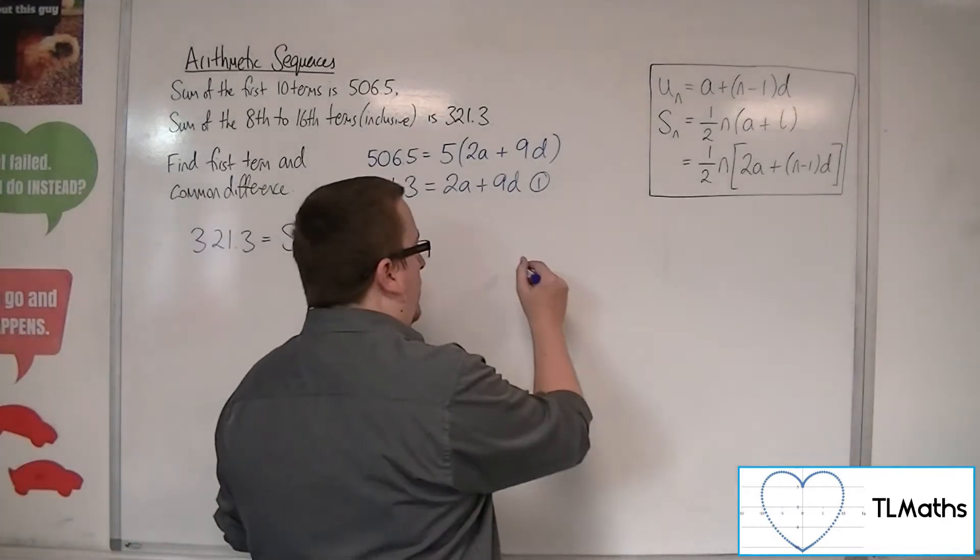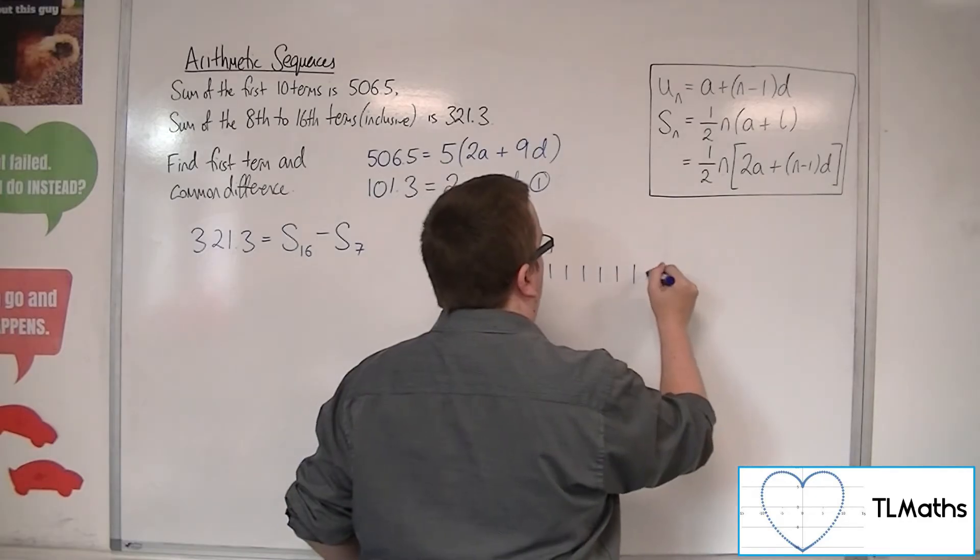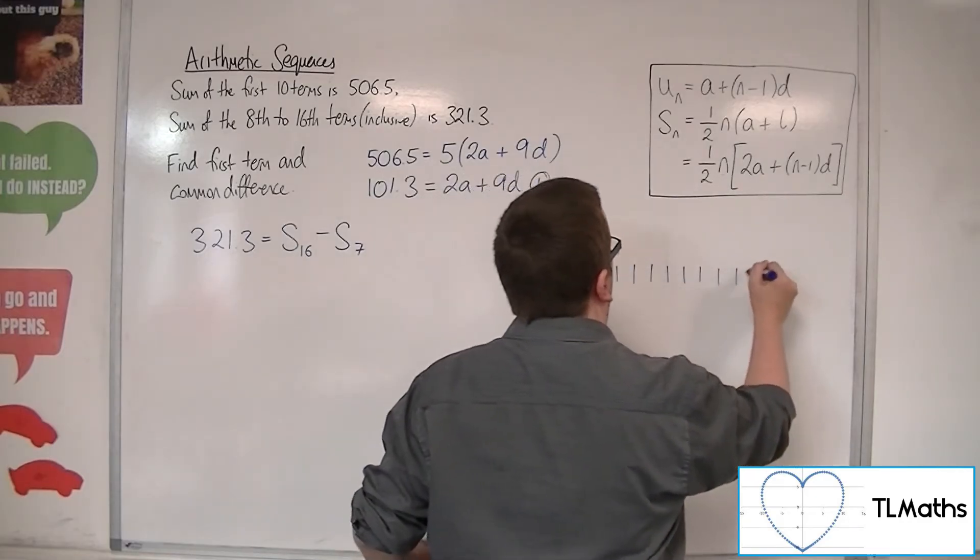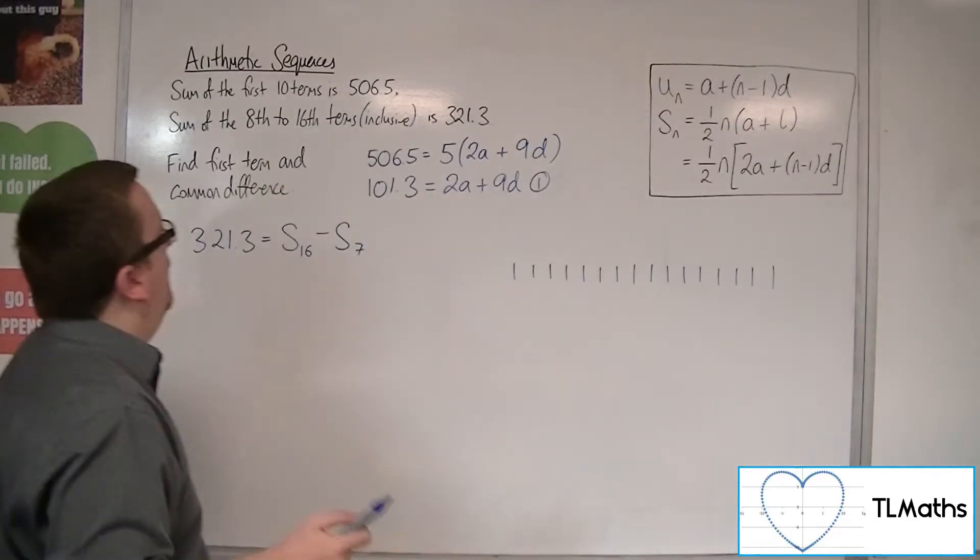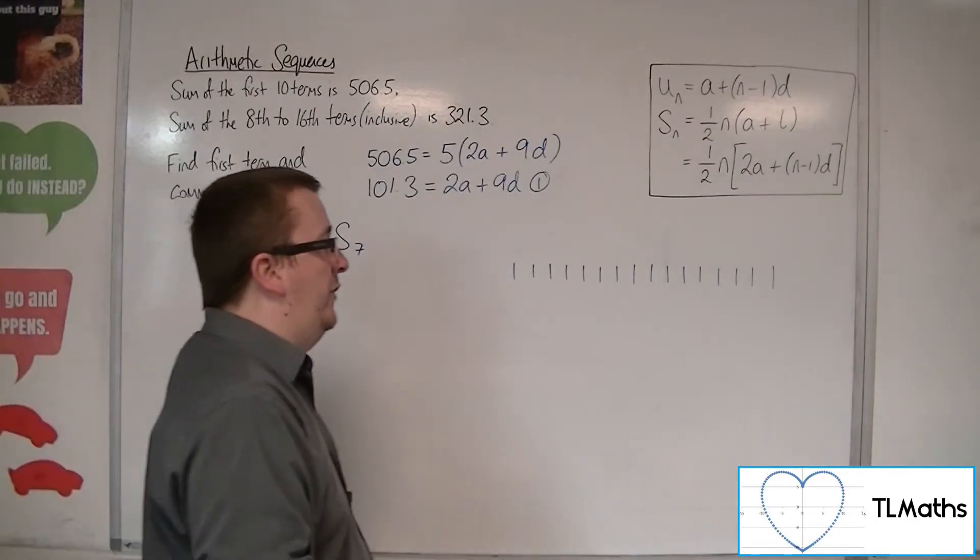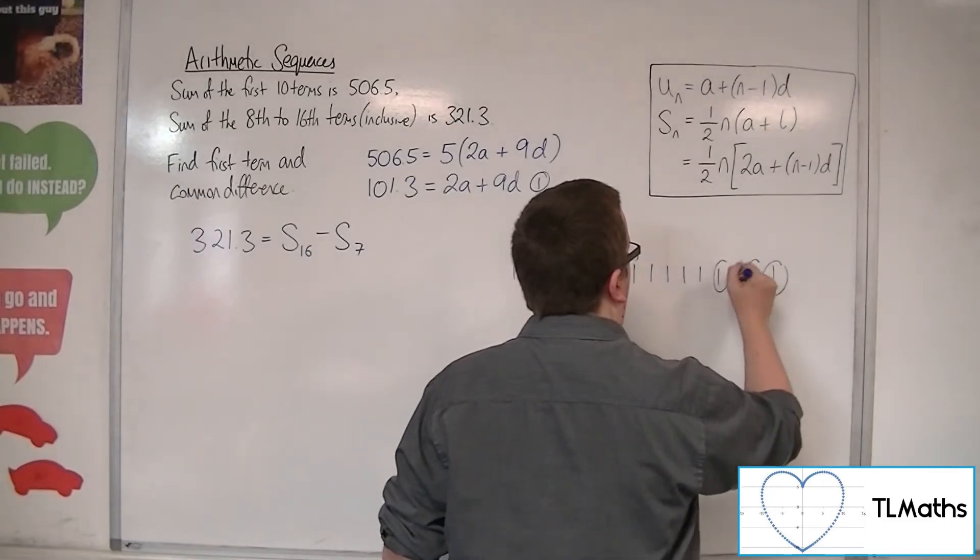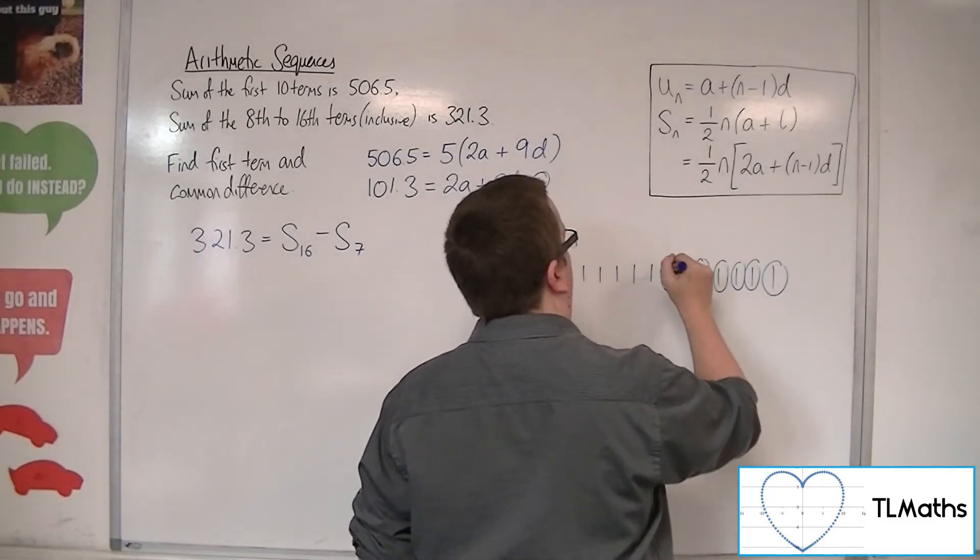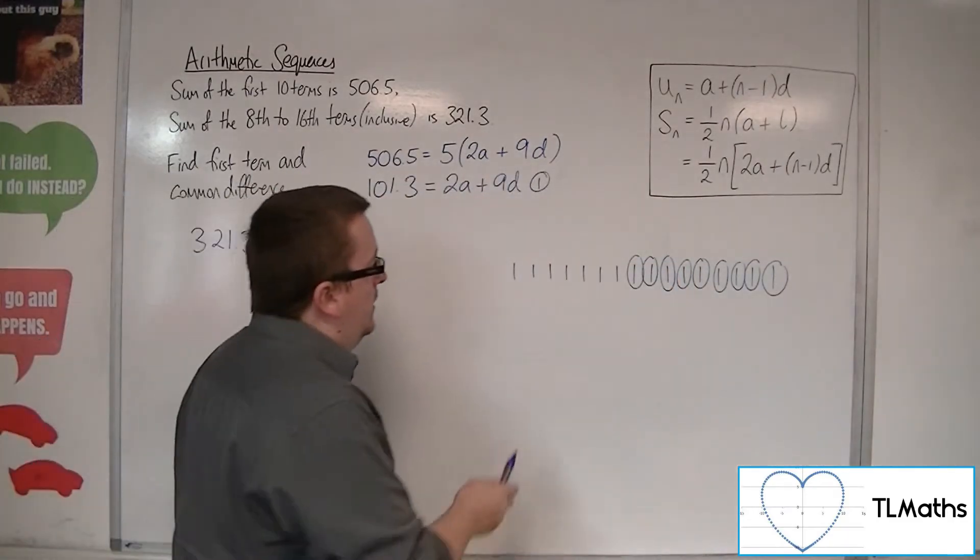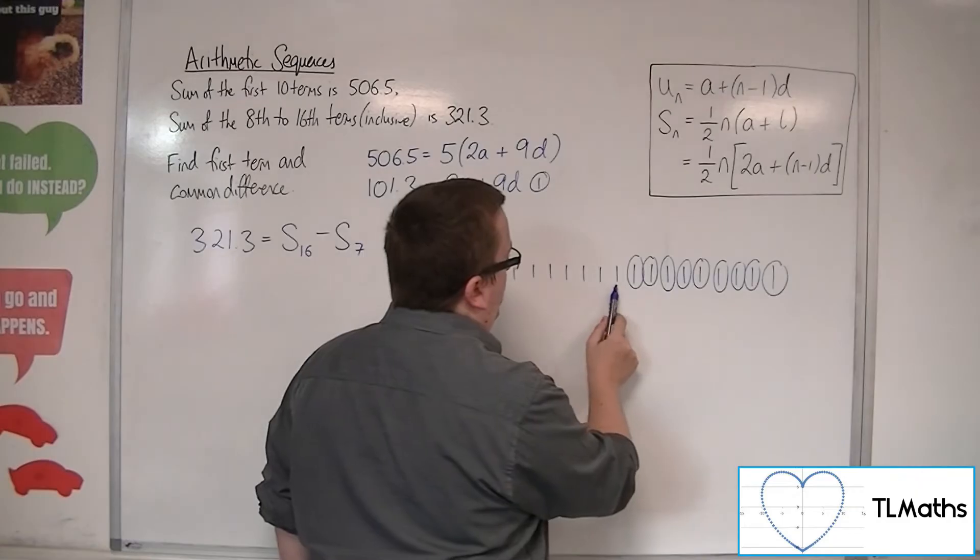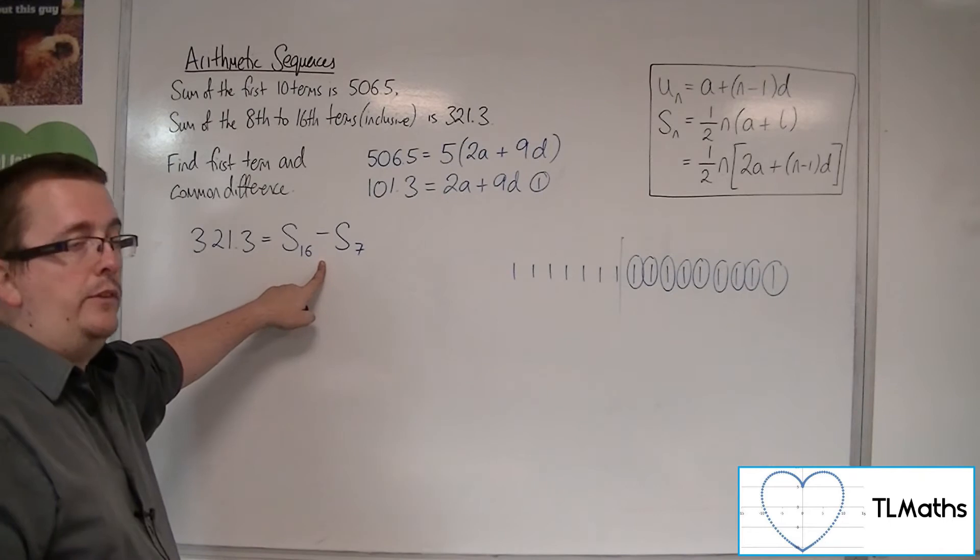This is like having 1 through 16, and saying, right, of those, I need the 8th to the 16th terms inclusive. So there's your 16th down to the 8th, and I need to include that 8th. Then 1 through 7 are left, so I cut away the 7 I don't need. And that's precisely what that means.